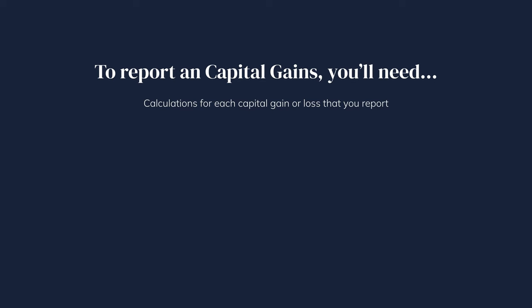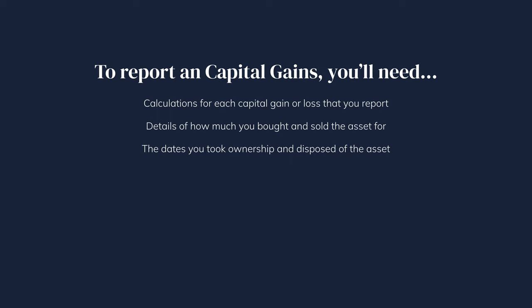To report any capital gains you'll need the following: calculations for each capital gain or loss that you report; details of how much you bought and sold the asset for; the dates when you took ownership and disposed of the asset; any other relevant details such as the costs of disposing of the asset; and any tax relief you're entitled to.